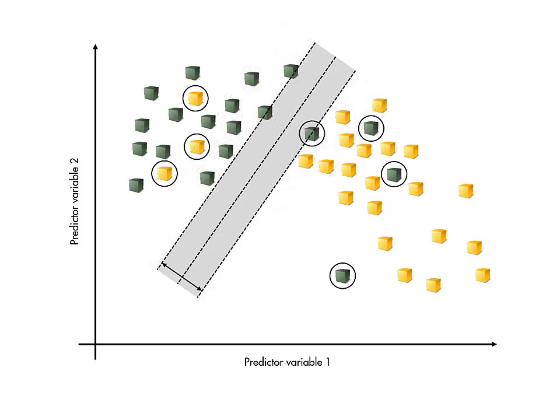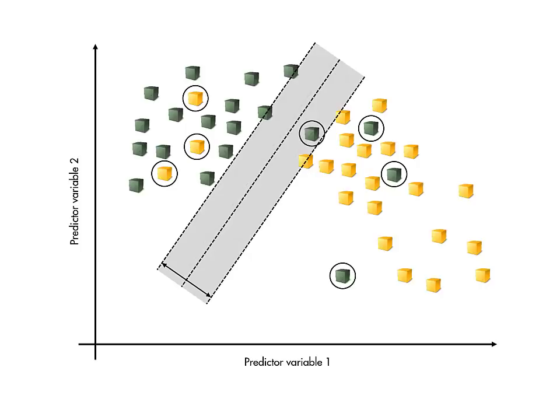The SVM solution, then, is the one that gives the best possible separation between classes. That is, the widest margin without unnecessary misclassifications.